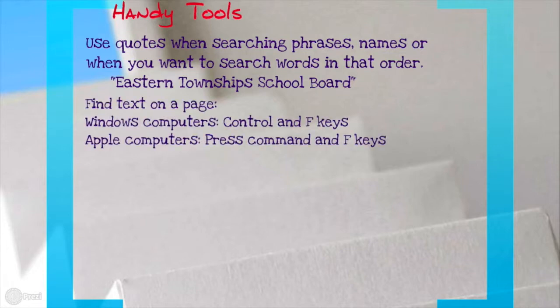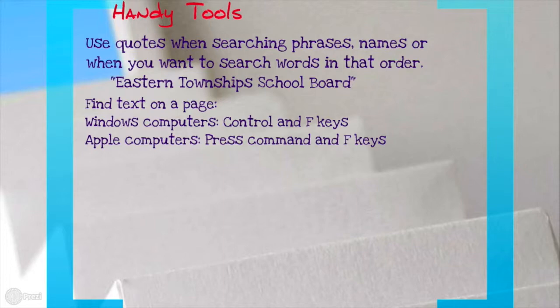Once you have some really good websites, you can look for information within a webpage by using either the Control and F key on your Windows computer or the Command F key on an Apple computer. You press those two buttons at the same time and it's like searching within a webpage — you're Googling your webpage. For example, if I wanted to find the word 'school' in a webpage, I could press Control or Command F and find all the different times that word is used.